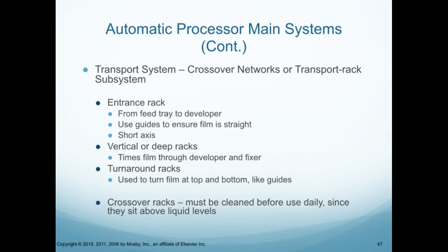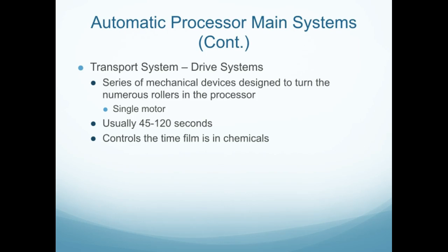The crossover racks must be cleaned before use daily, since they sit above the liquid levels and can get dirty. The drive system is a series of mechanical devices designed to turn the numerous rollers in the processor, with one single motor doing all this. Usually 45 to 120 seconds — basically two minutes to develop your film — and it controls the time film is in the chemicals. Very important.